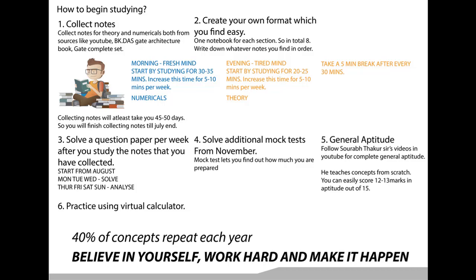From November, start giving one mock test per week or one mock test every two weeks, and analyze them carefully. For General Aptitude, those 15 marks are your rank deciders. Many architecture students study only architecture and get only eight to nine marks in General Aptitude, while you can score 13 to 14 marks. Even one mark can change your rank by 20 to 30 positions. Also, start practicing the GATE virtual calculator when solving papers or giving mock tests.